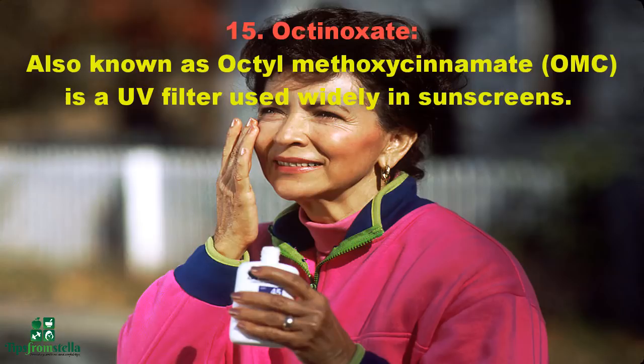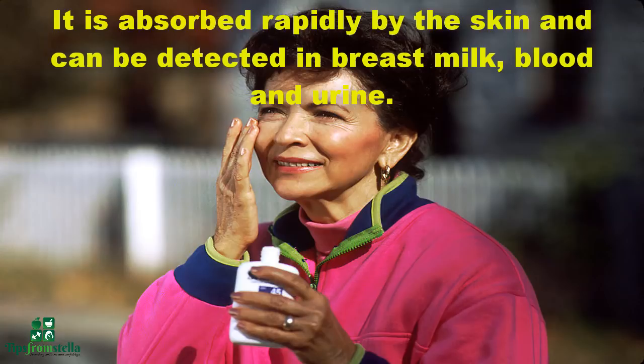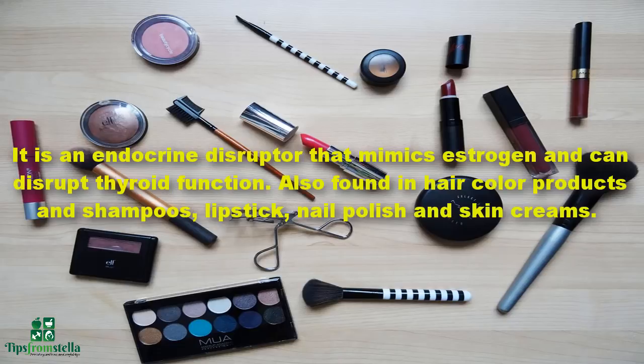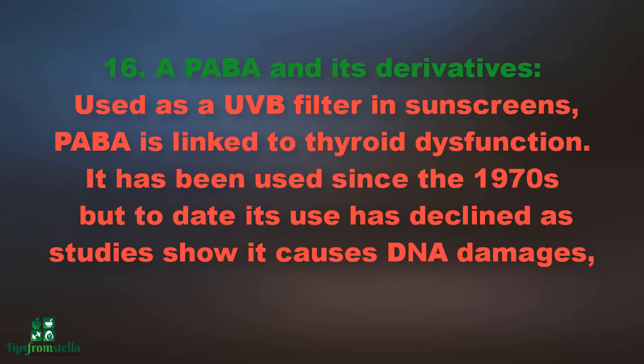Number fifteen: octinoxate, also known as octyl methoxycinnamate or OMC. It is a UV filter used widely in sunscreens, absorbed rapidly by the skin and detectable in breast milk, blood, and urine. It is an endocrine disruptor that mimics estrogen and can disrupt thyroid function. Also found in hair color products, shampoos, lipstick, nail polish, and skin creams. Look out on labels for oxybenzone, methyl cinnamate, OMC, parsol MCX, parsol MOX, escalol, and 2-ethylhexyl p-methoxycinnamate.